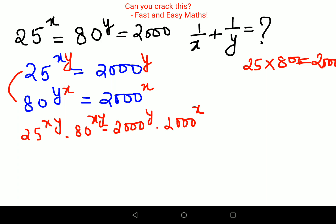Remember when you have a raised to b into c raised to b, this can be written as a times c the whole raised to b. So using the same logic, because we have the same indices, we'll multiply 25 into 80.